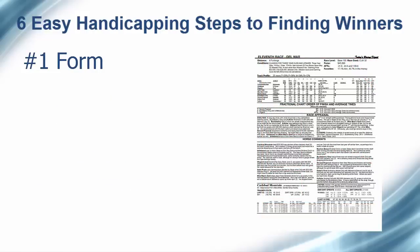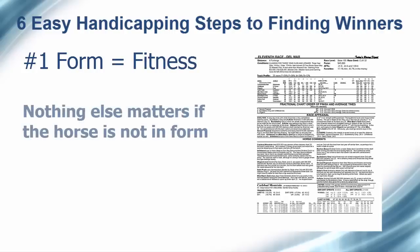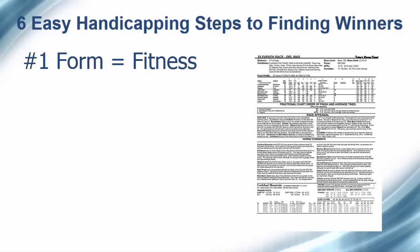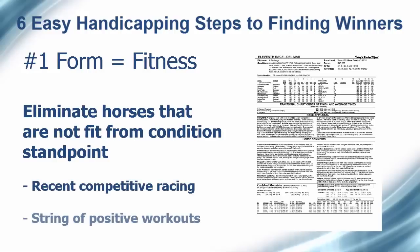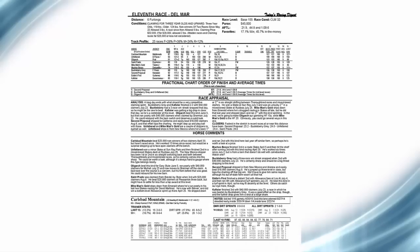The first step to finding winners is handicapping form, which is basically the fitness level of the horse. Nothing else really matters if a horse is not in form. When handicapping form, you will want to go through the race and eliminate those horses that do not appear to be fit from a condition standpoint, either through recent racing or workouts that suggest the horse is set to run its best.